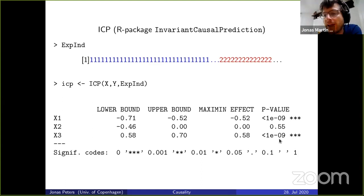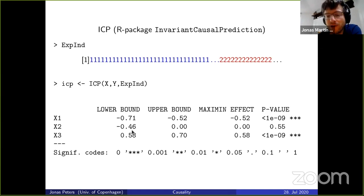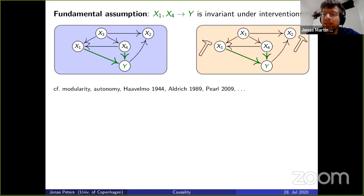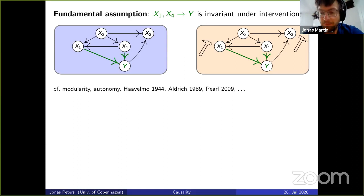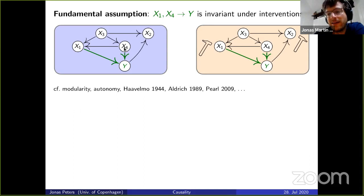The method looks like magic but is extremely simple. It indeed recognizes X1 and X3 as the causal variables, showing X2 is a good predictor but not causal. The idea: if the two datasets come from two different interventional distributions — intervening anywhere in the graph except on Y — then the conditional distribution of Y given its causal parents remains the same in both datasets. By definition, since we are not intervening on Y, the structural assignment of Y remains the same, so the conditional of Y given X1 and X4 stays the same.